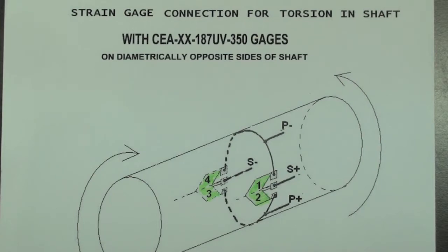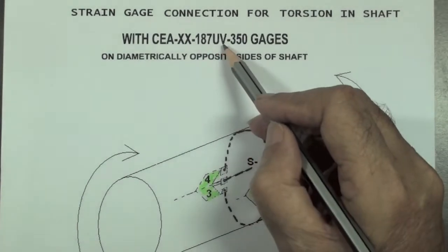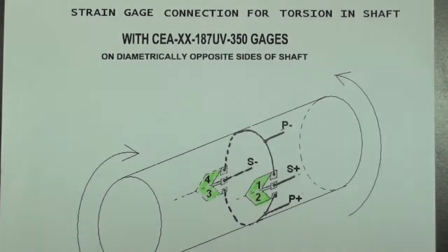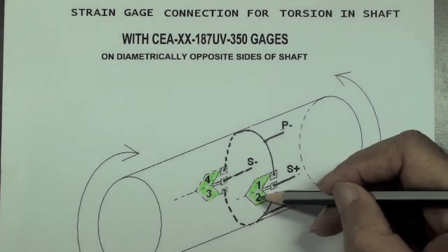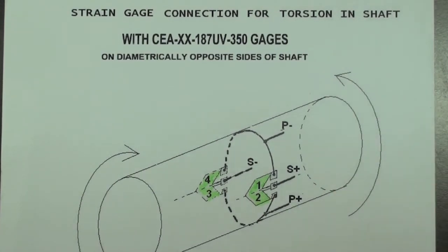For measuring torque in a cylindrical bar or shaft, a pair of shear gauges such as the micromeasurement's 187 UV gauges can be used. These are two element gauges with grid lines at 45 degrees to the long axis and they get aligned to the principal strains on the bar when it is subjected to torsion.